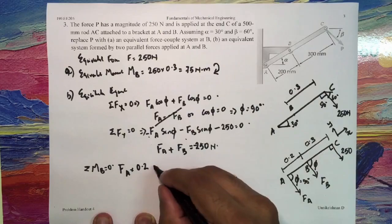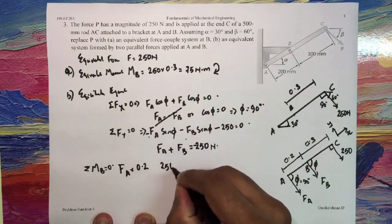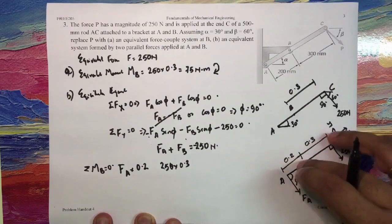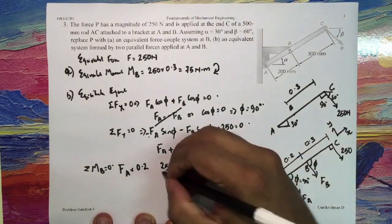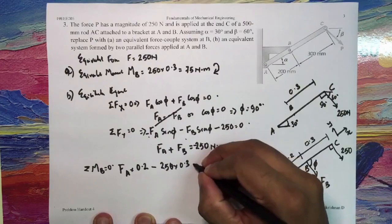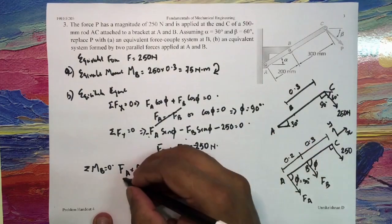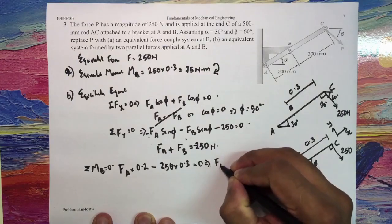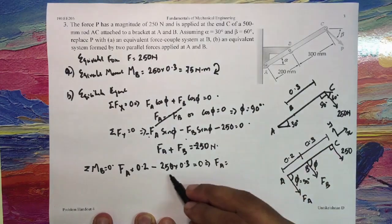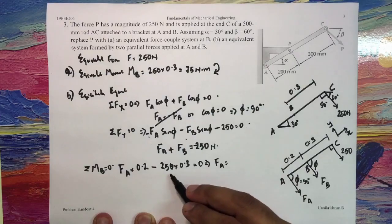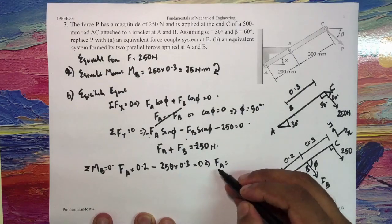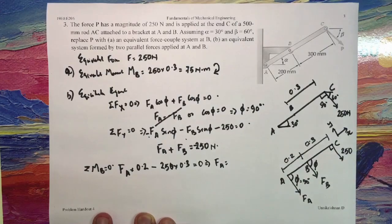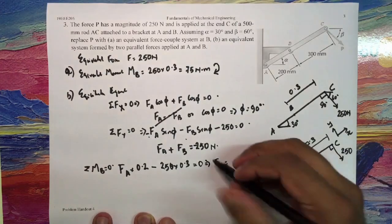And 250 into 0.3, so this 250 into 0.3 is acting in the clockwise direction, so it is minus, to be equal to 0. Which implies I have FA is equal to, this 250 minus 250 into 0.3 goes to the other side of the equation, so FA I would get it to be 375 Newtons.